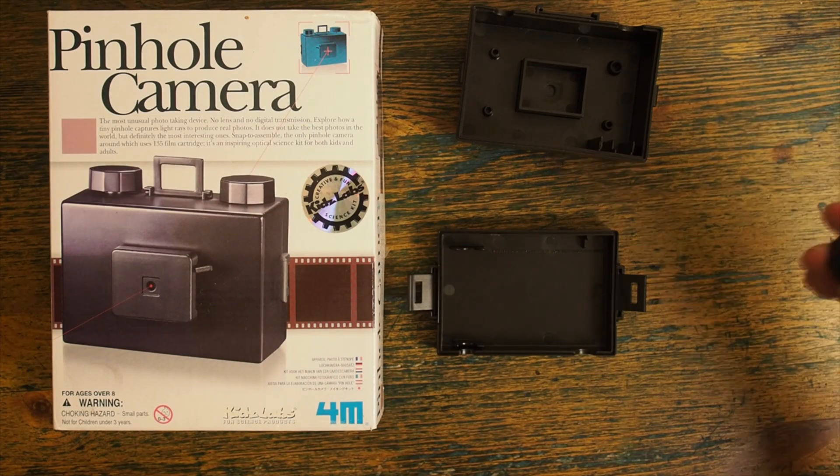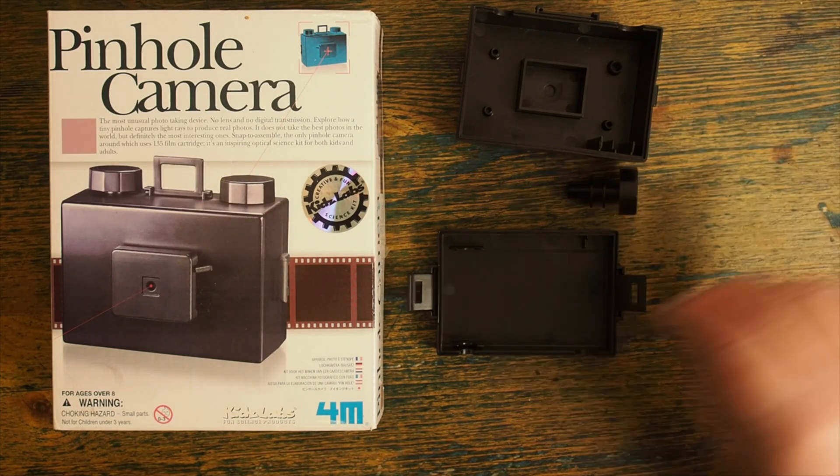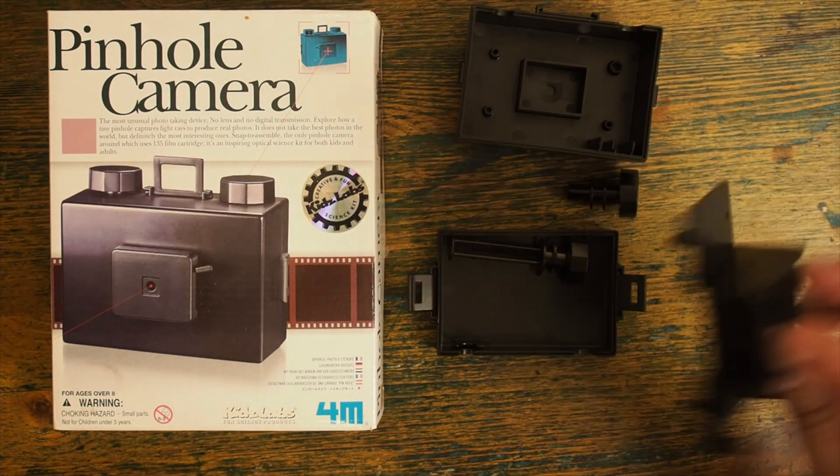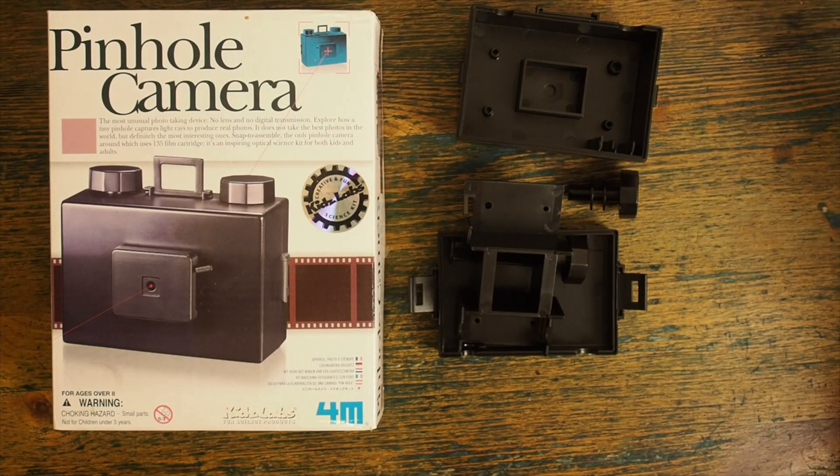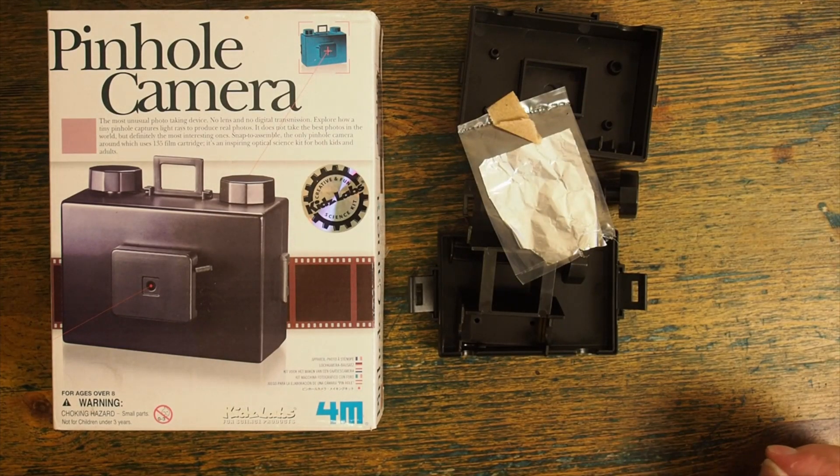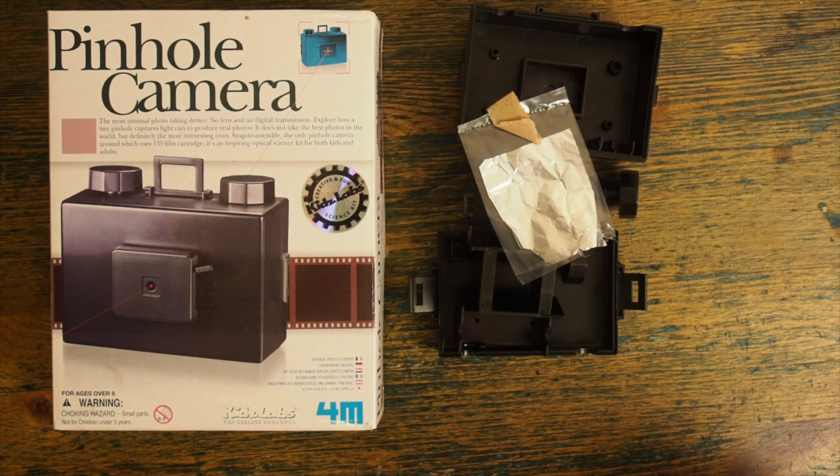Right, the other bits that come with it are these knobs, this thing, whatever it is, a piece of silver foil, and some sticky tape. OK, clear a bit of space to see how long it takes me to make it.